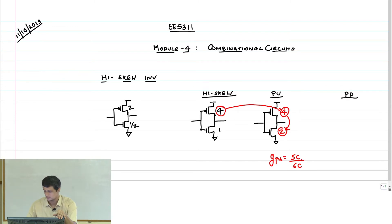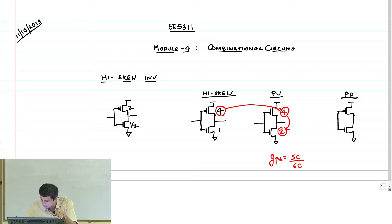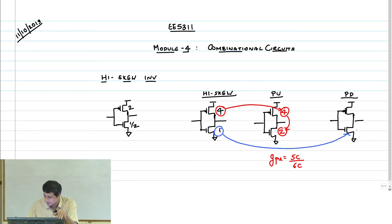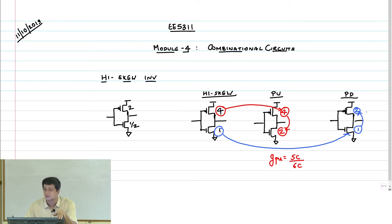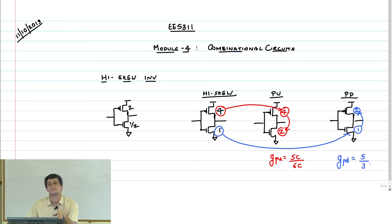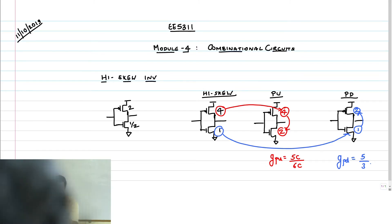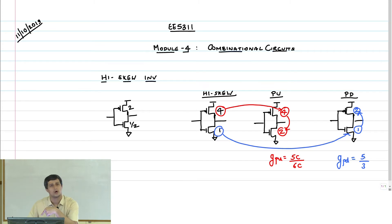You get 5/6. Now what about pull-down? This is my reference inverter. This 1 will appear here. If this is 1, then PMOS should be 2, and therefore I get logical effort pull-down equals 5 by 3. This is what we got yesterday: 5/6 and 5/3. Clearly the pull-down is greater than 1 and pull-up has been made less than 1.